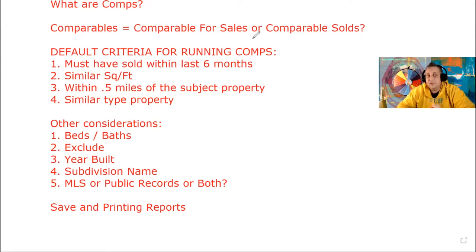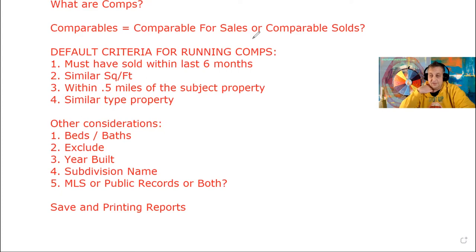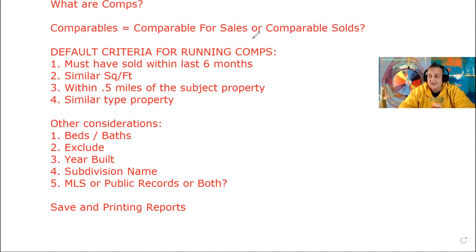Criteria number four: similar type property. You can't really truly compare split-levels with straight ranches. A ranch is a one-floor house, usually a long rectangle shape. That can't really be compared to a shotgun bungalow, which goes long-ways deep, or a split-level. So you're looking for similar type properties, similar square feet, within a half mile, and something that sold within the last six months. Those are the big four.